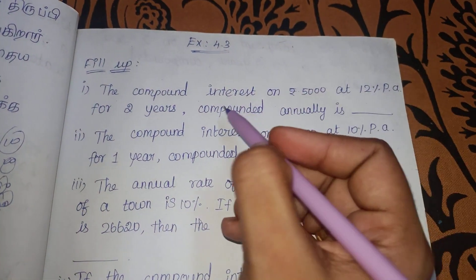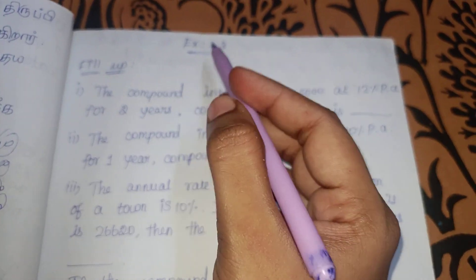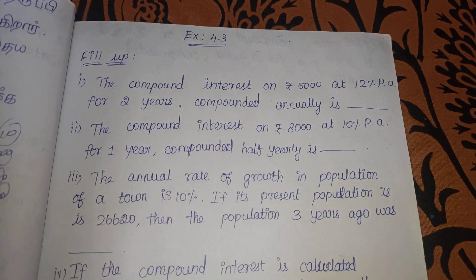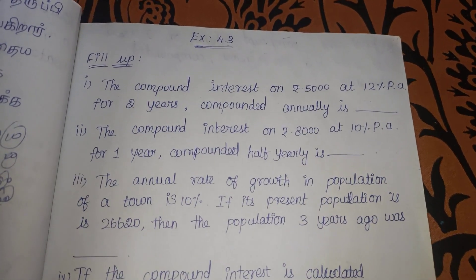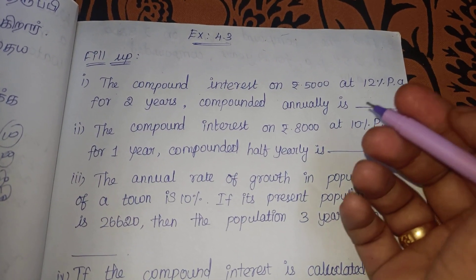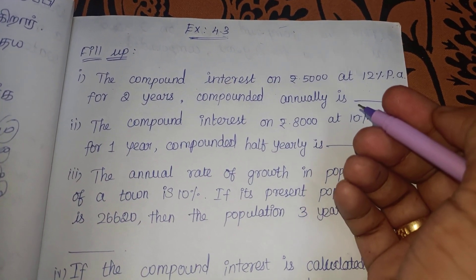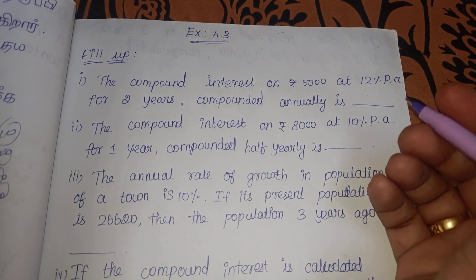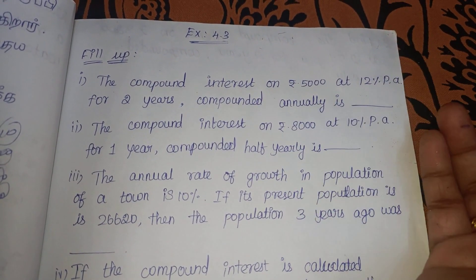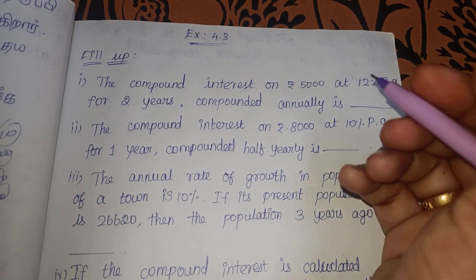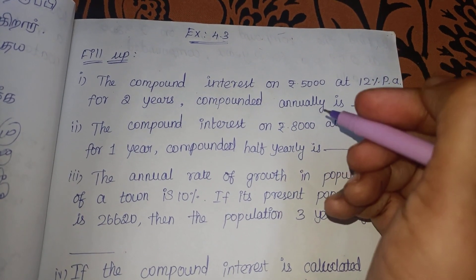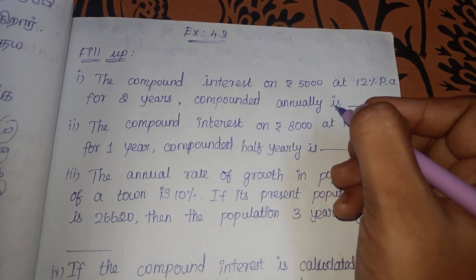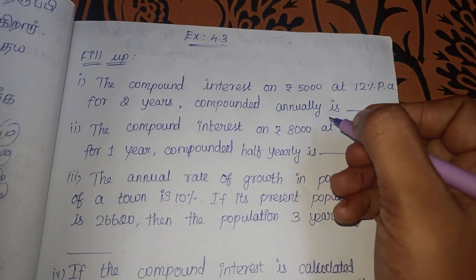In this video, compound interest is 4.3 compound interest. You can see 1 mark here. So, 1 mark will be easy to get. So, if you don't make money, you can make money. If you don't make money, you can make money easier.